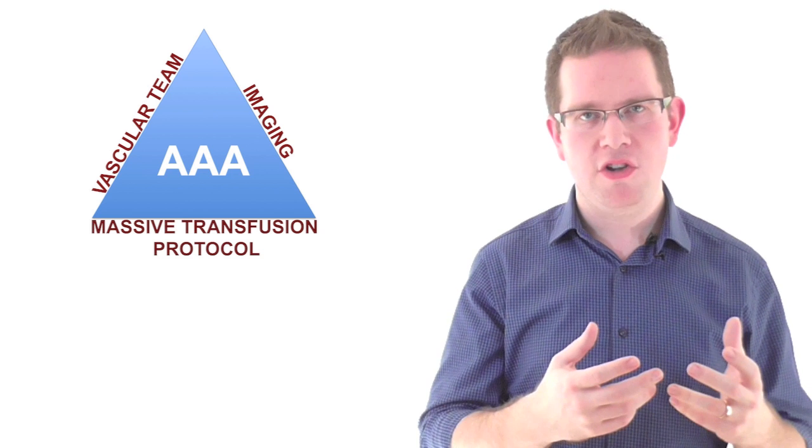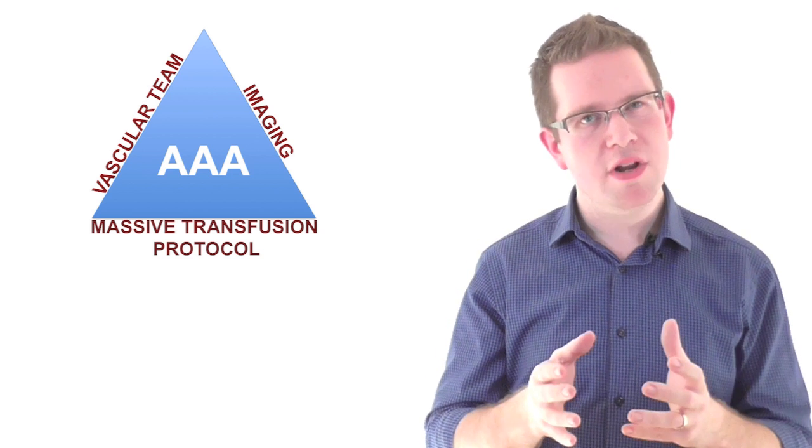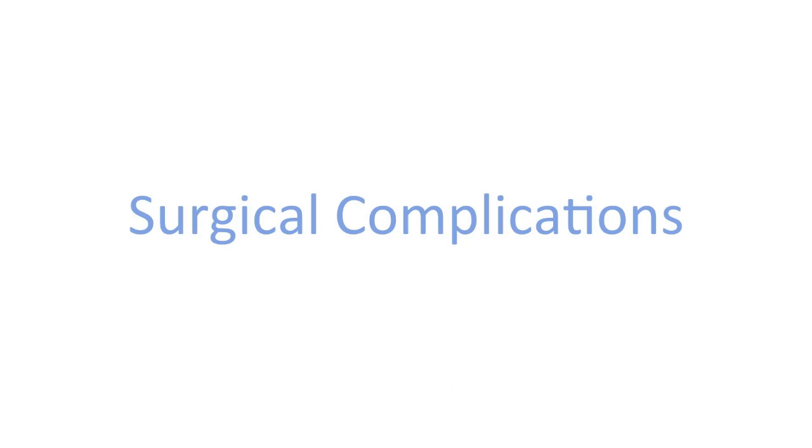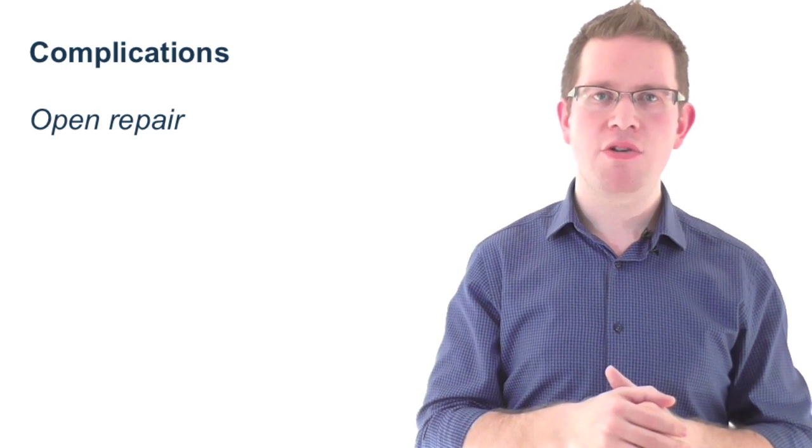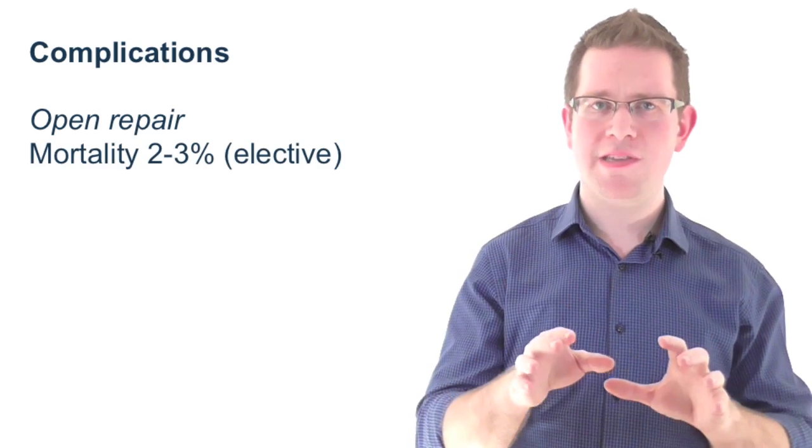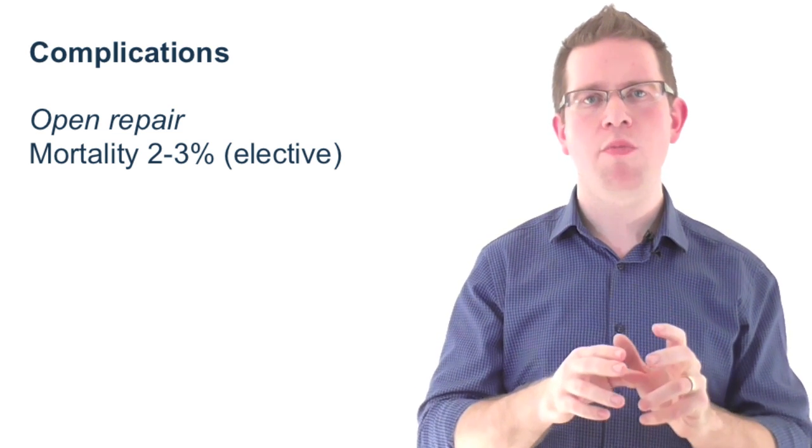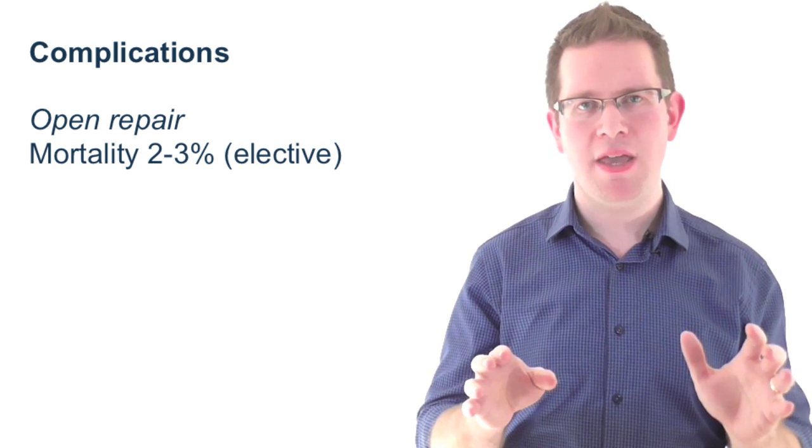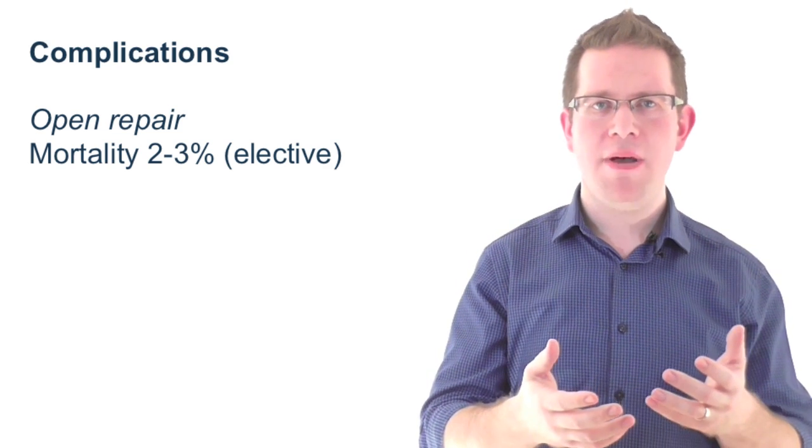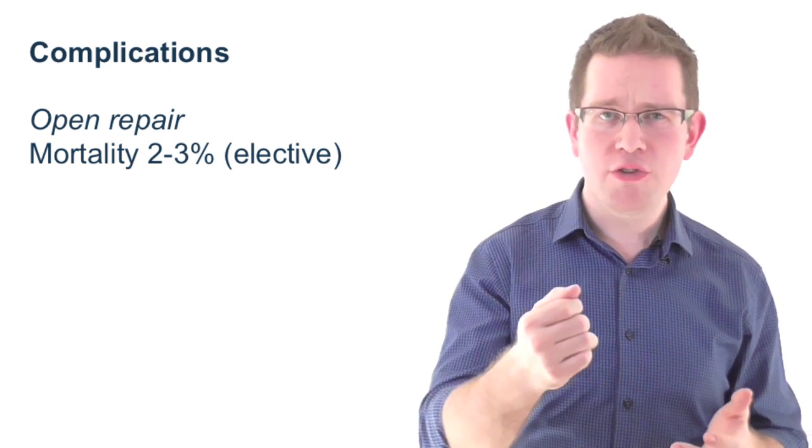In terms of which surgical approach is best, the jury is still out. Mortality from elective AAA repair in the UK is now around 2-3%. Open aneurysm repair has all the complications one would associate with any laparotomy. In the case of open AAA repair, patients tend to lose a lot of blood.